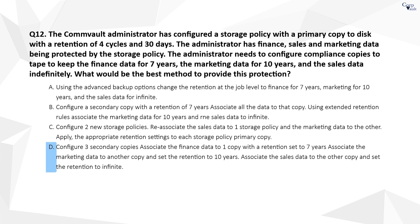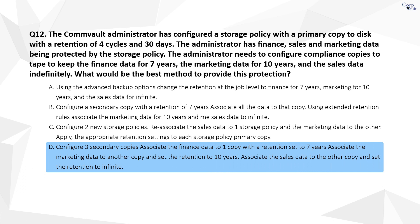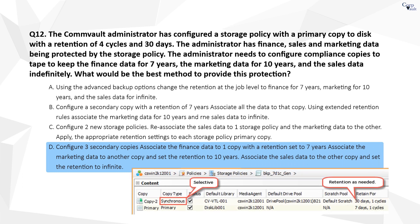The correct answer is D. As you have three different departments with three different extended retention requests, you create three different secondary copies with copy type selective, one for each department, and set the extended retention as requested. The fewer storage policies you create, the better to manage the data.